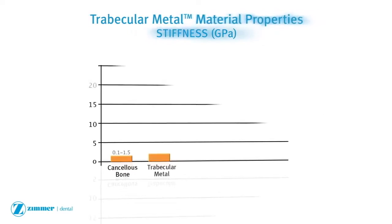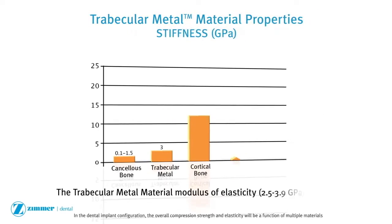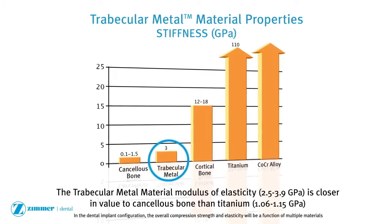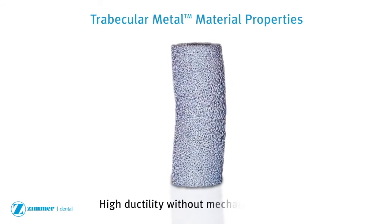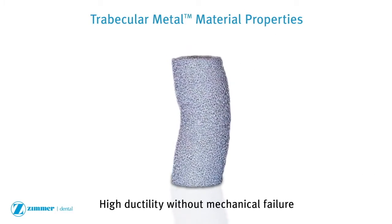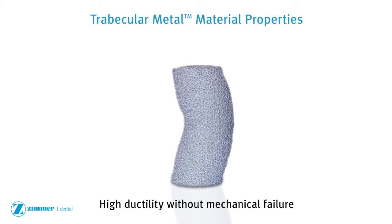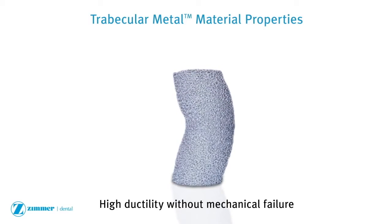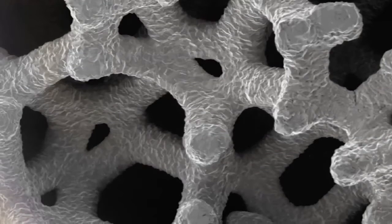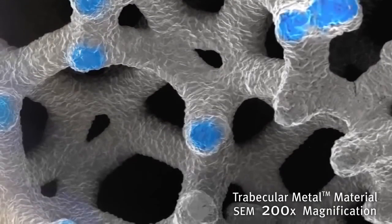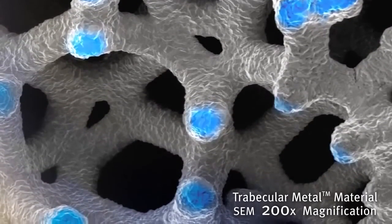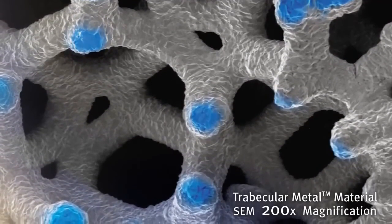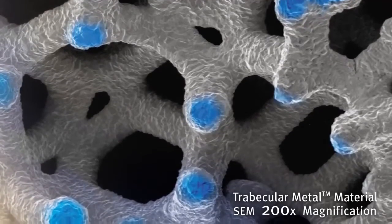Trabecular metal material has a low modulus of elasticity similar to cancellous bone. In compression testing, trabecular metal material exhibits high ductility without mechanical failure. Trabecular metal material has been demonstrated to contribute to the primary stability of the implant based on in vitro insertion torque testing.